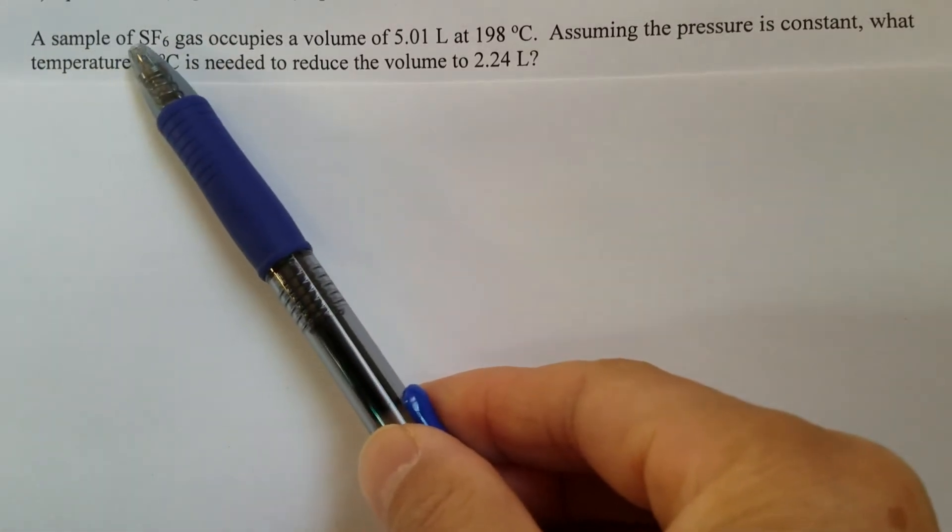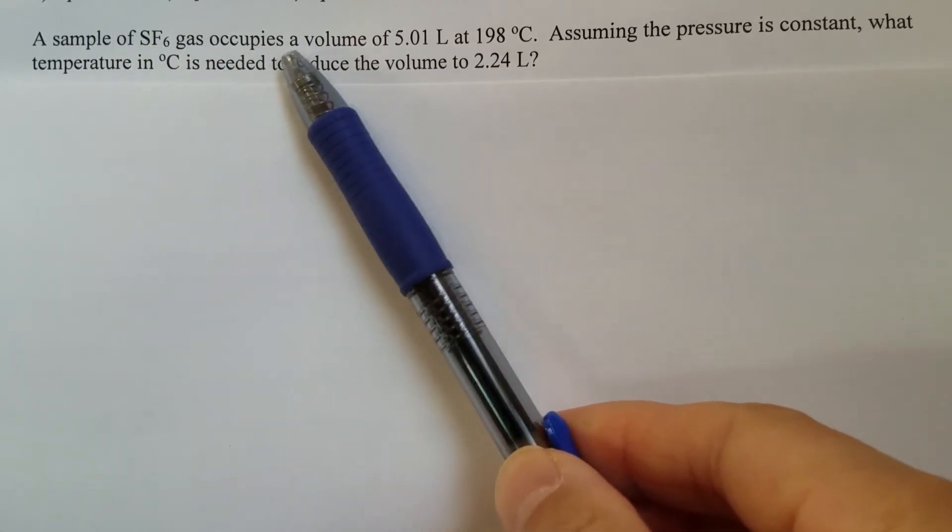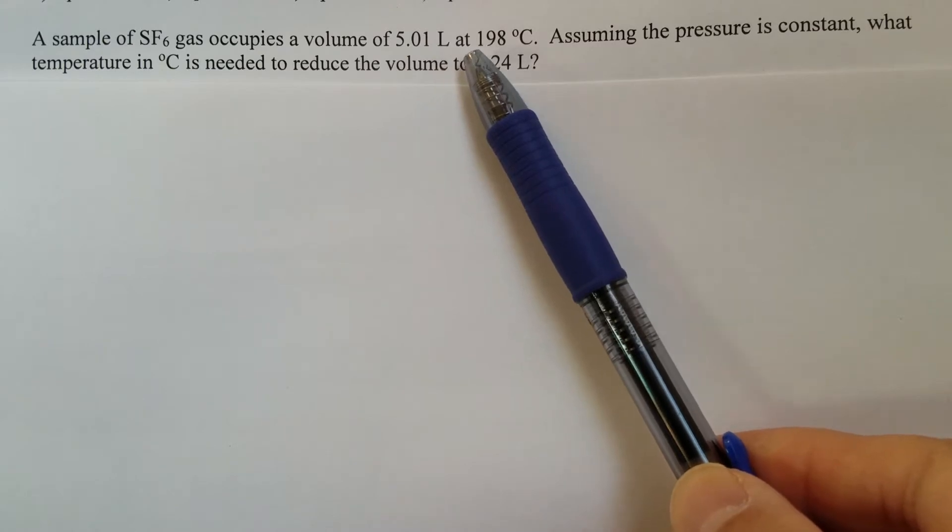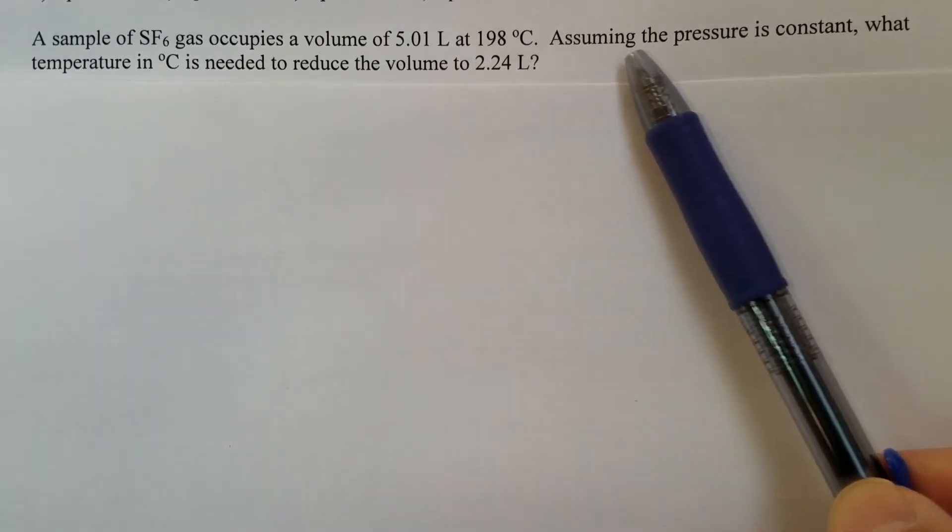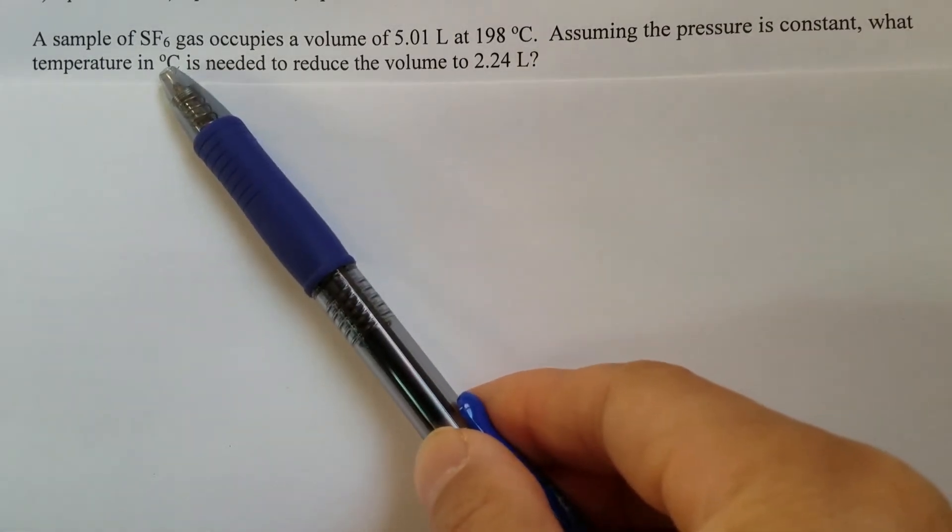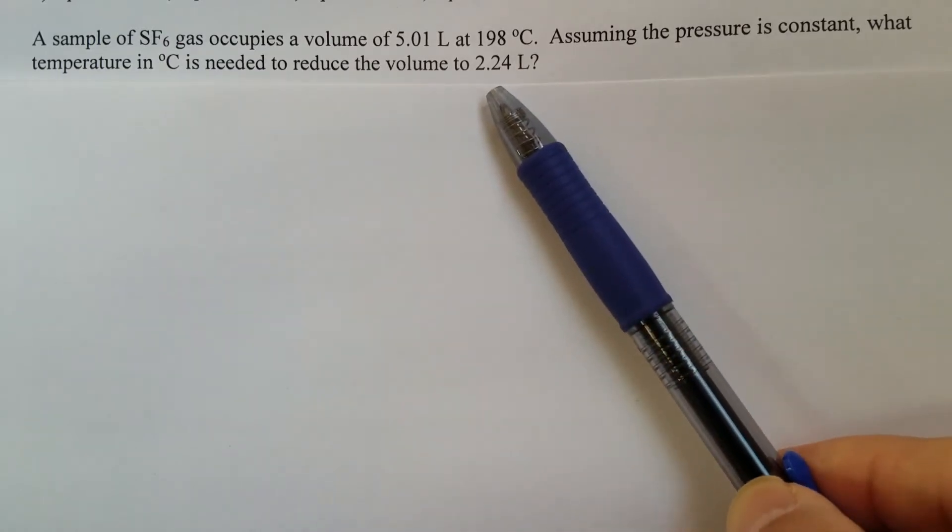A sample of sulfur hexafluoride gas occupies a volume of 5.01 liters at 198 degrees Celsius. Assuming the pressure is constant, what temperature in degree Celsius is needed to reduce the volume to 2.24 liters?